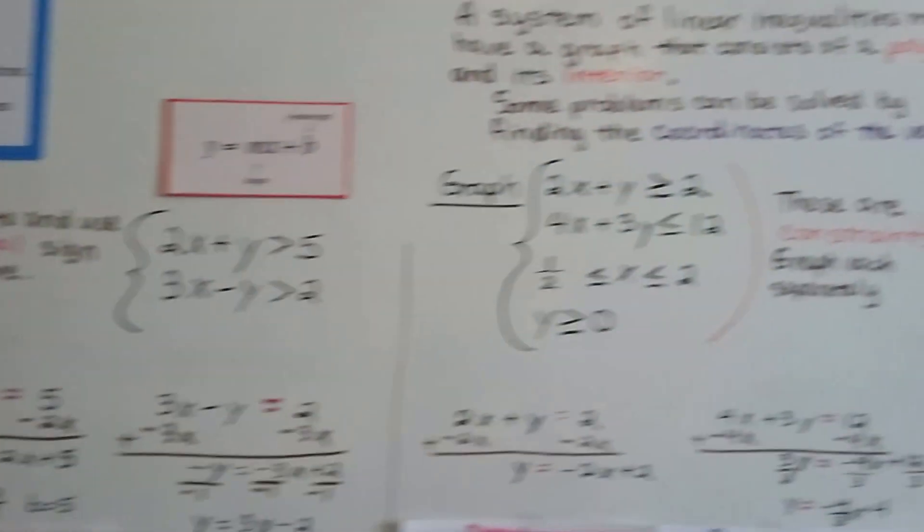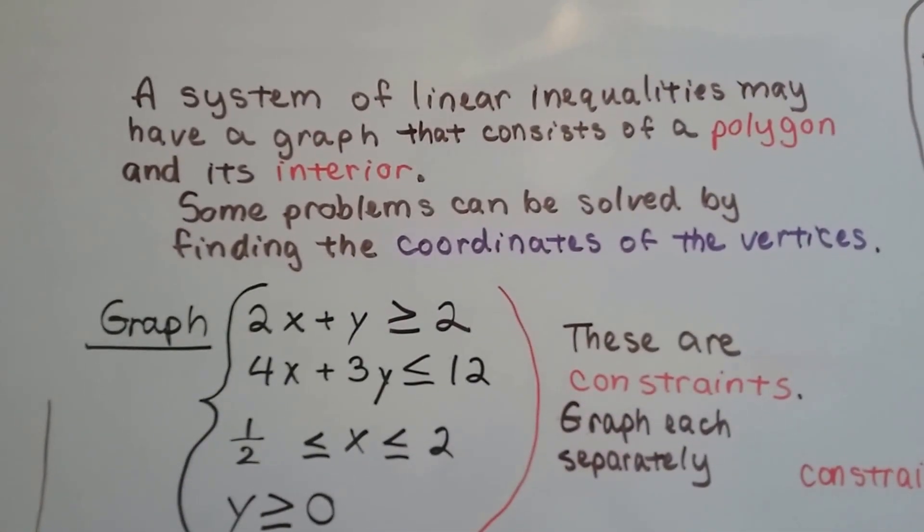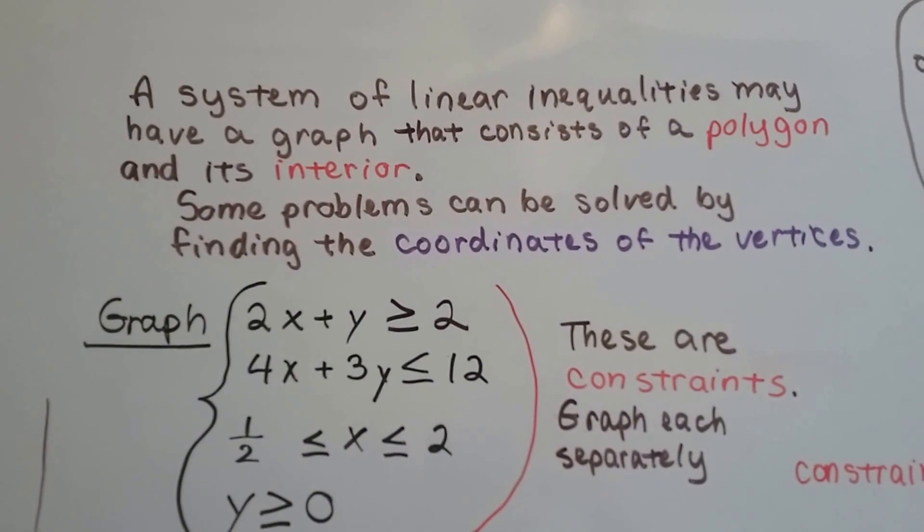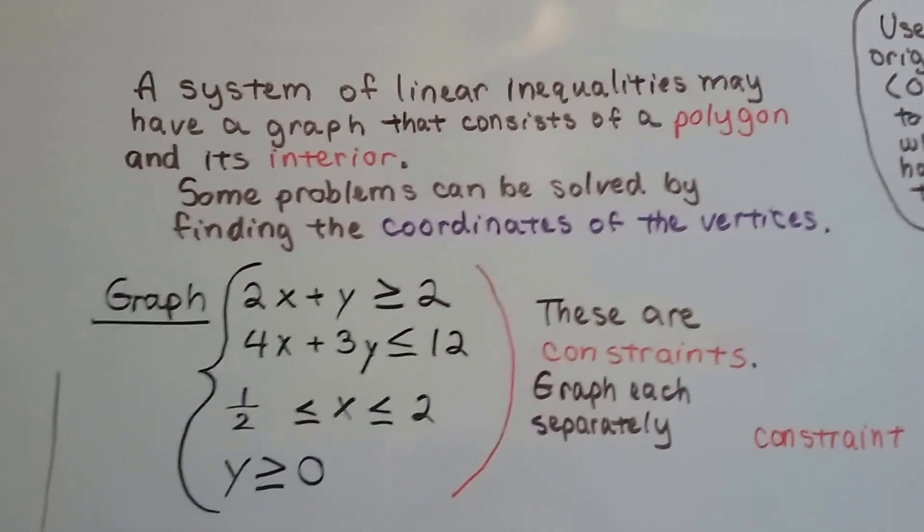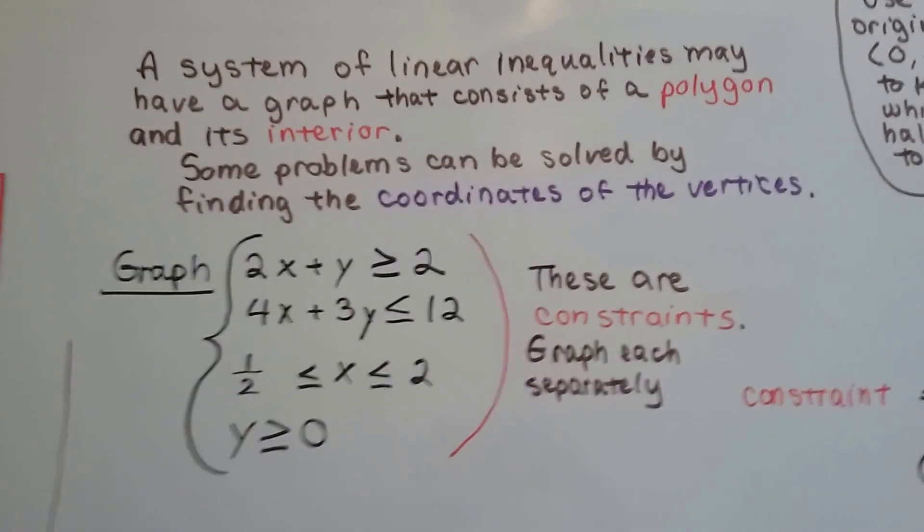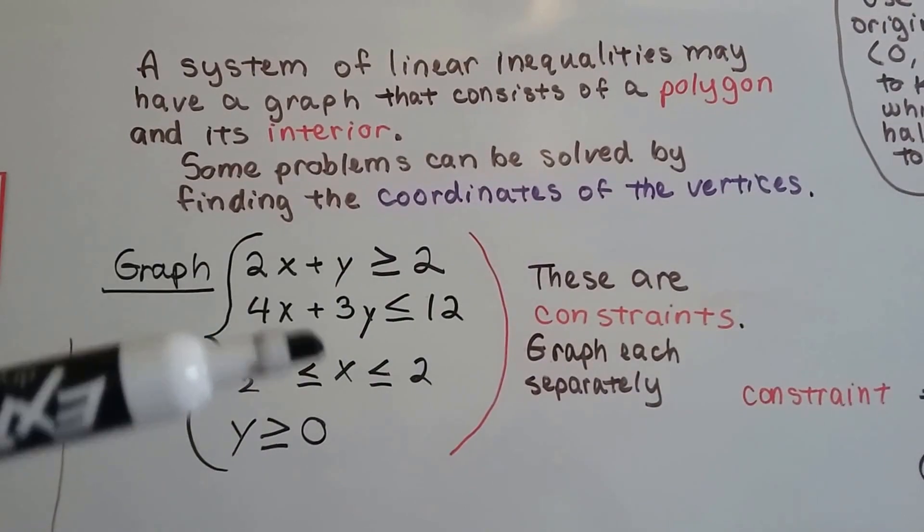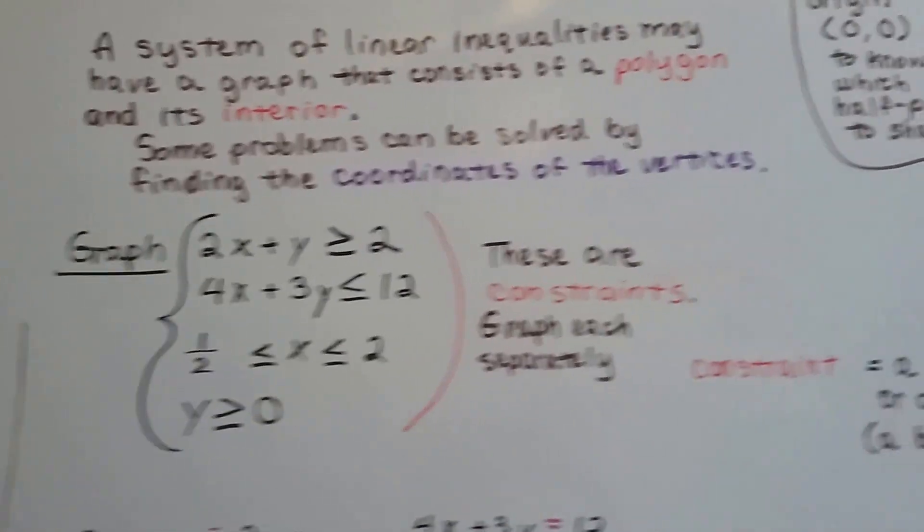So let's find some vertices here. A system of linear inequalities may have a graph that consists of a polygon and its interior. Some problems can be solved by finding the coordinates of the vertices. So here we've got a system of four inequalities. They're also called constraints. Each of these is a constraint. I'm going to graph them separately.